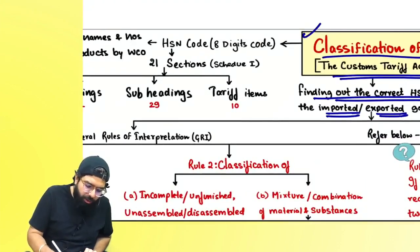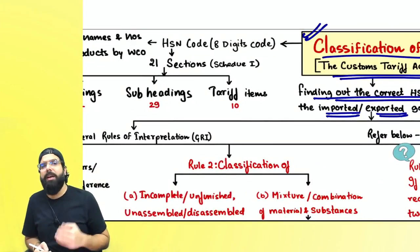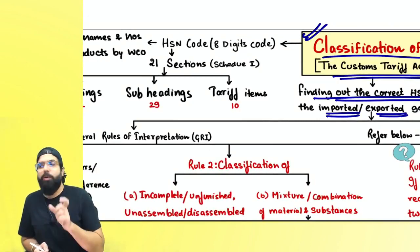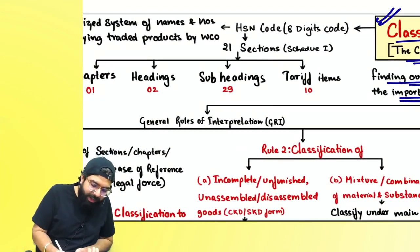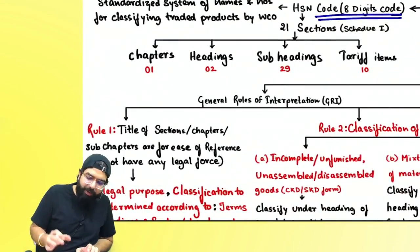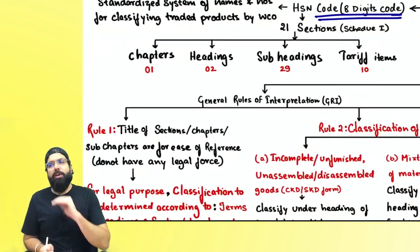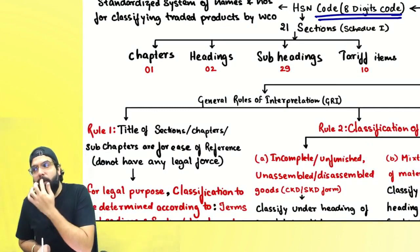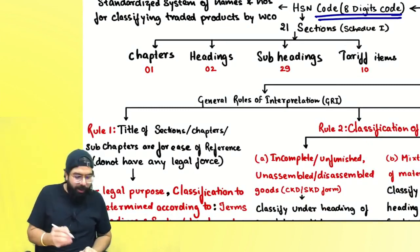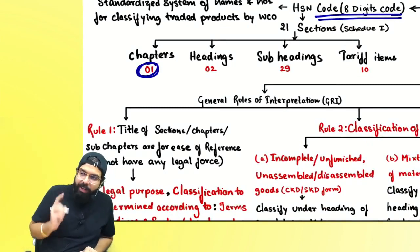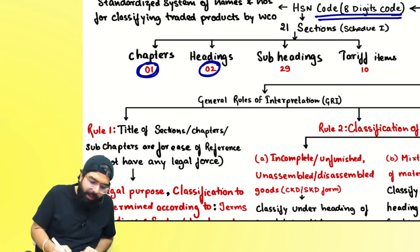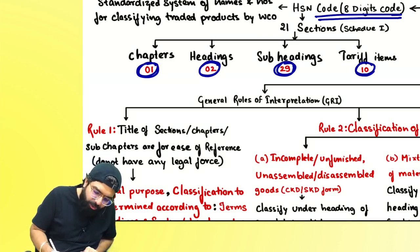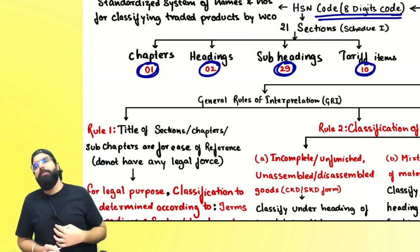When classifying, you find the correct HSN code in the Custom Tariff Act. The HSN code is an eight-digit code. The first two digits are your chapter, the second two digits are your heading, the third two digits are your sub-heading, and the last two digits are your tariff item.